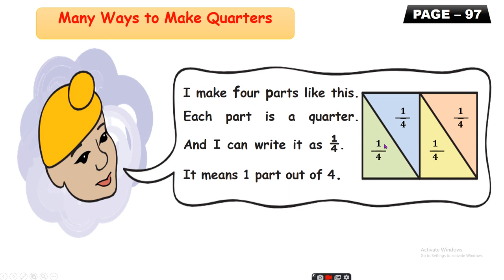What is the meaning of one upon four? That means four equal parts have been made of any object, and out of those we have to show only one part — that means one part out of four. This rectangle has four parts made. Out of those, we have shown one part. That means one upon four — one part out of four.